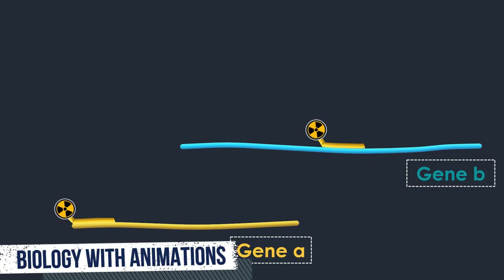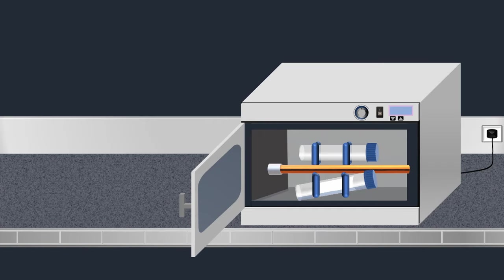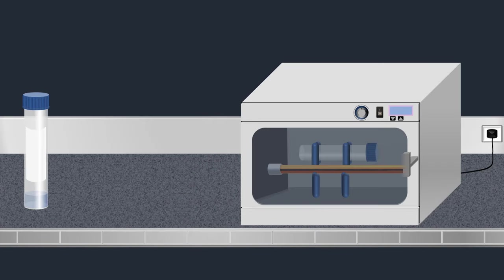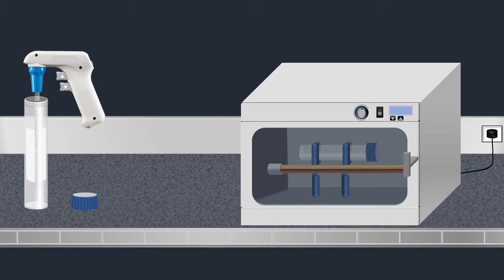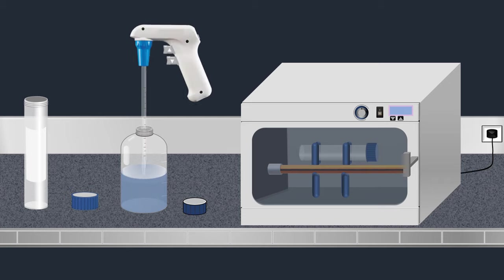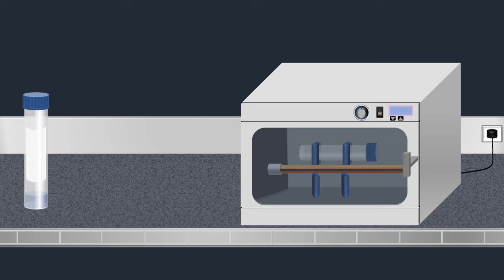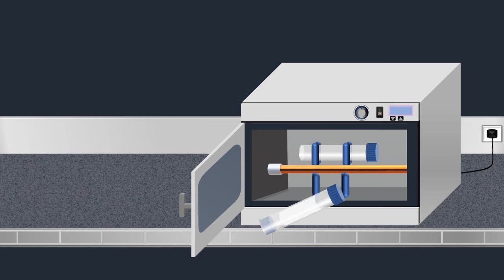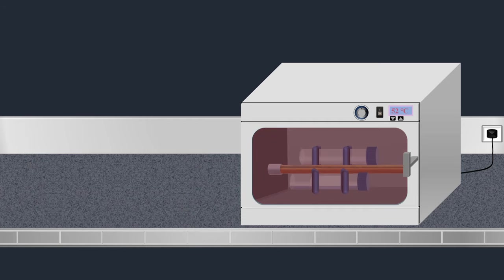After the hybridization of each probe to its target sequence, the hybridization solution is removed. Next, a wash buffer is added into the bottle. Then the membrane is incubated at 52 degrees Celsius for 30 minutes. The washing process is repeated three times to remove unbound and weakly binding probe.